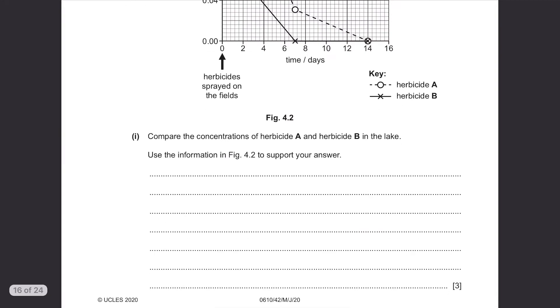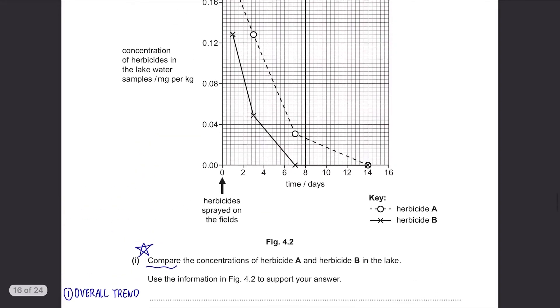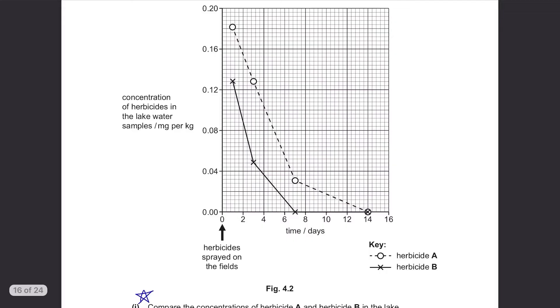Compare the concentrations of herbicide A and herbicide B in the lake. Use the information in figure 4.2 to support your answer. Comparing is a popular question in biology. You need to know how to answer this question. First, talk about the overall trend. As I just mentioned, the concentration of both herbicides decrease over time.